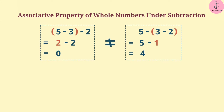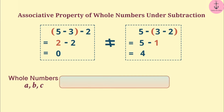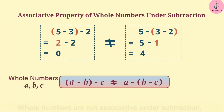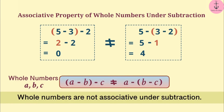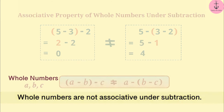The results in both cases are different. When subtracting any three whole numbers A, B, C by making different groups, the results are different. This means (A − B) − C and A − (B − C) are not equal. That is why whole numbers are not associative under subtraction.